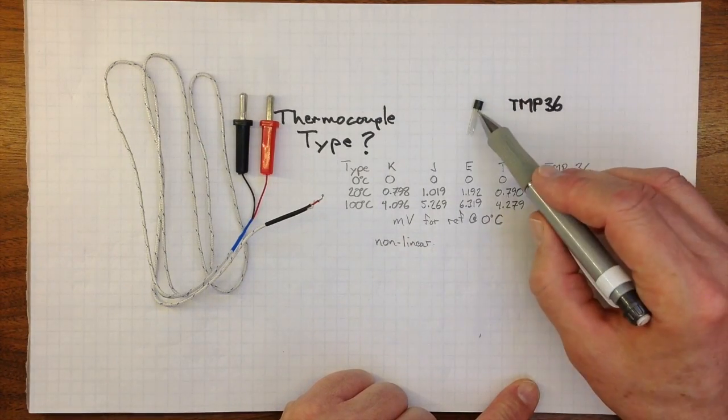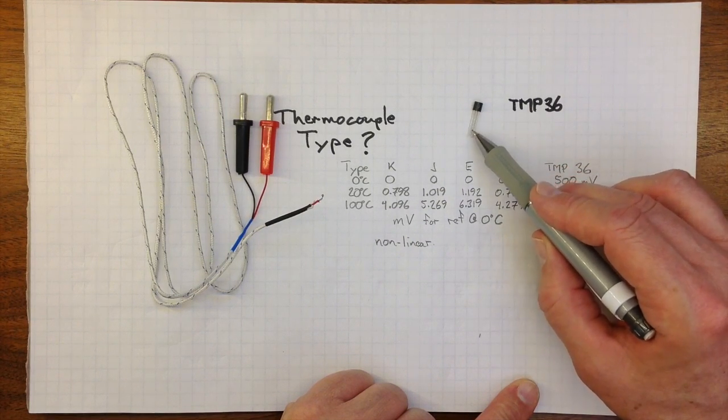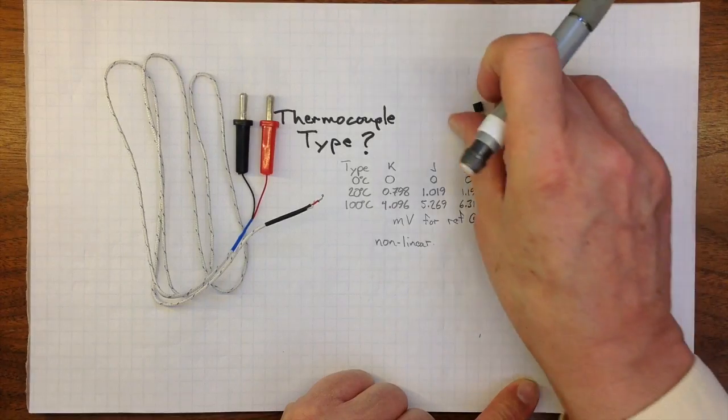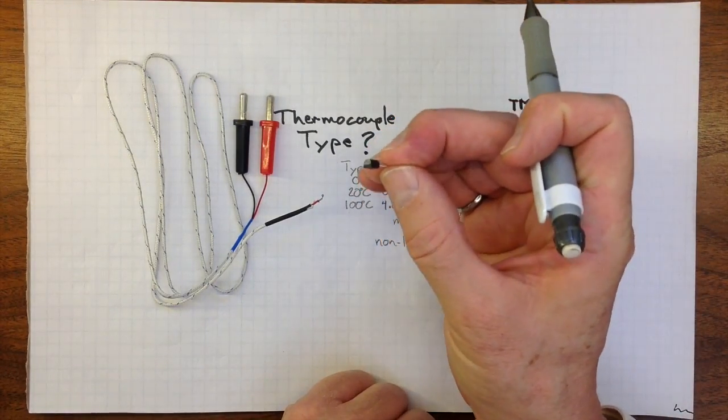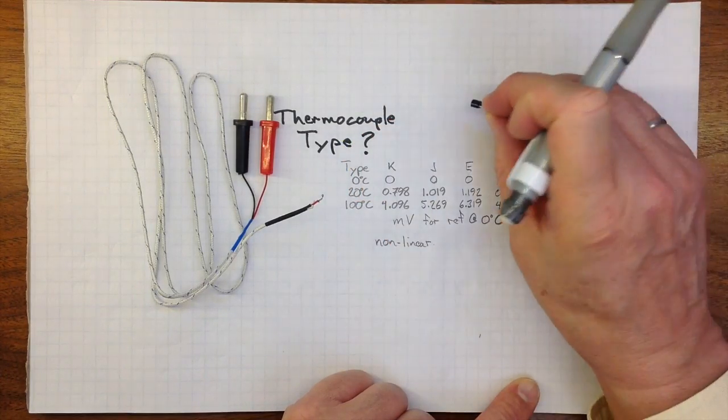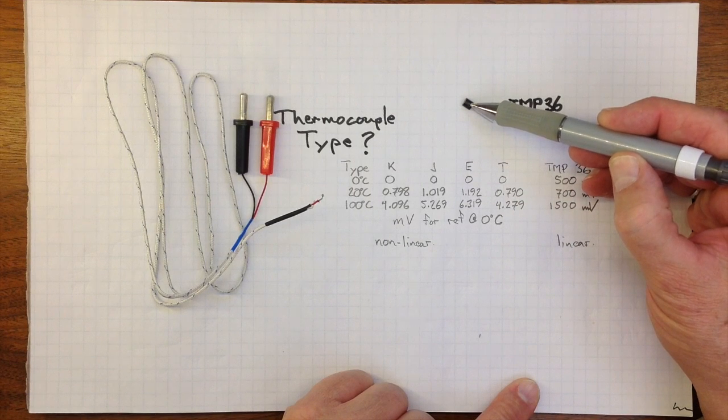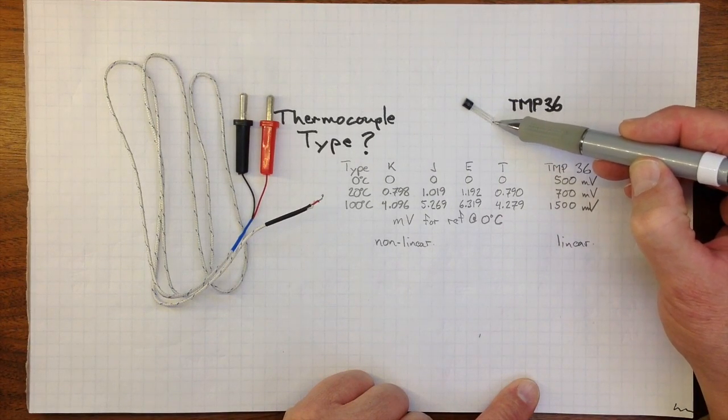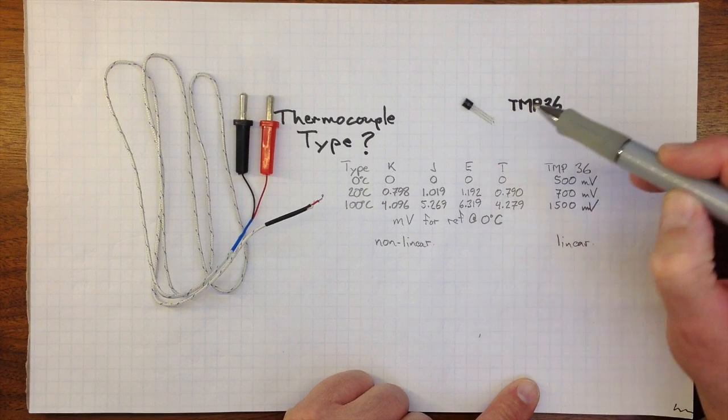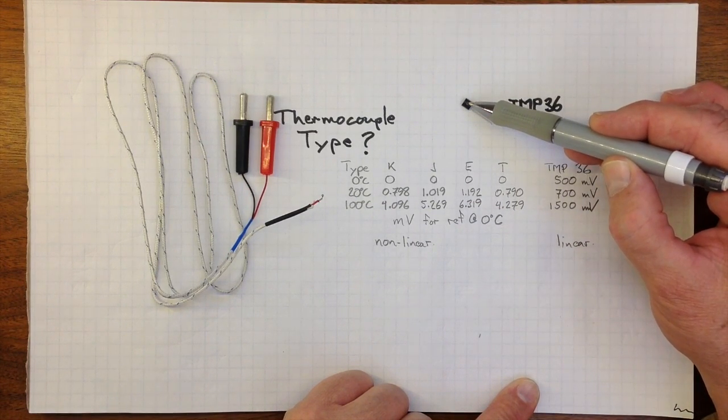The other transducer we're going to use is one of these TMP36 integrated circuit transducers, and it's just a little black box encapsulated in plastic. Inside there is probably a thermistor and some linearization circuitry, and the result is that if we apply power to these two leads on the outside, then from the middle lead, we can get a signal that will vary linearly with temperature.